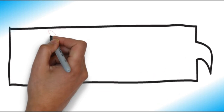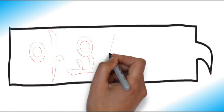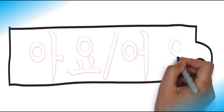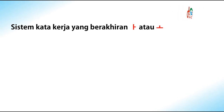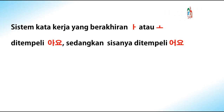Oke teman-teman, kali ini kita akan mempelajari akhiran kata informal, yaitu ayo dan oyo. Bagaimana penggunaannya? Ayo dan oyo adalah akhiran bentuk informal yang ditempelkan di belakang kata kerja dan kata sifat. Sistem kata kerja yang berakhiran A atau O ditempel ayo, sedangkan sisanya ditempel oyo.